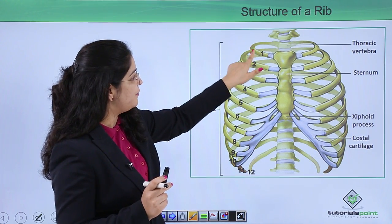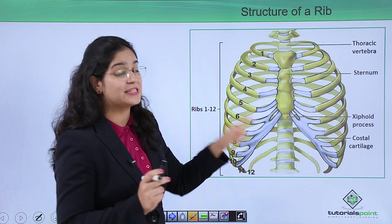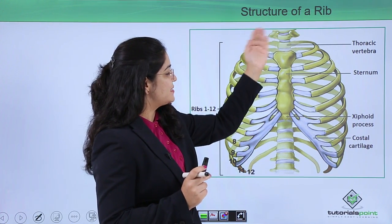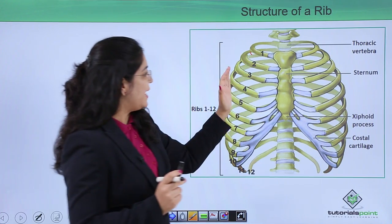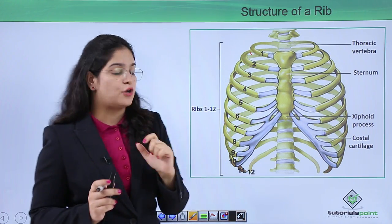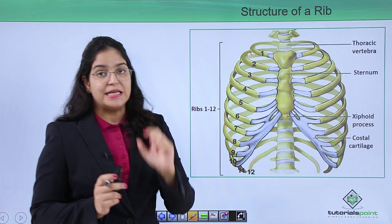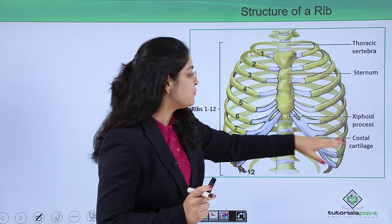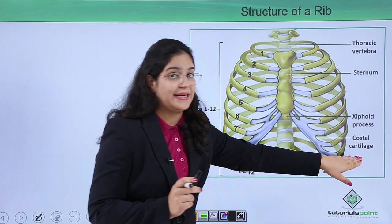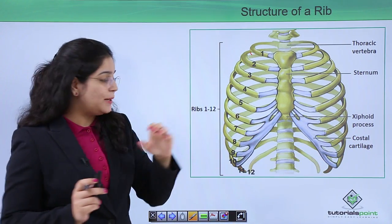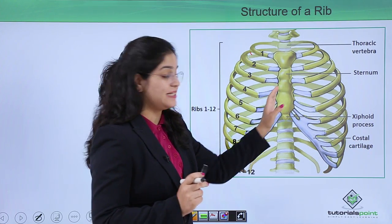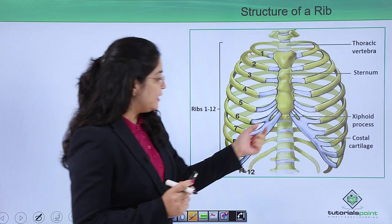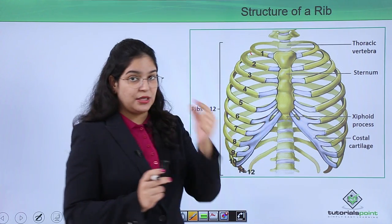The part of the rib connected to the sternum is called the sternal portion. So the back side of the rib is the vertebral portion, and the front part is the sternal portion. The sternal portion also contains a part called the costal cartilage. The connection between the ribs and sternum also includes a special portion below the sternum.